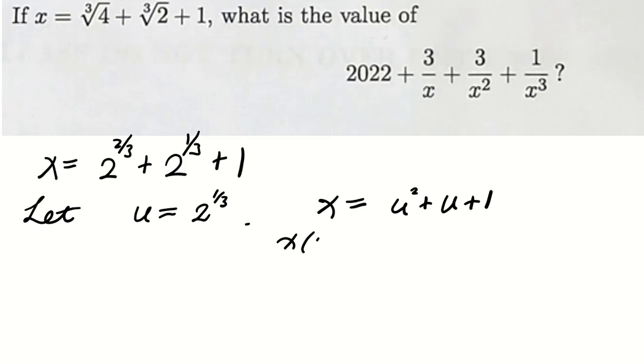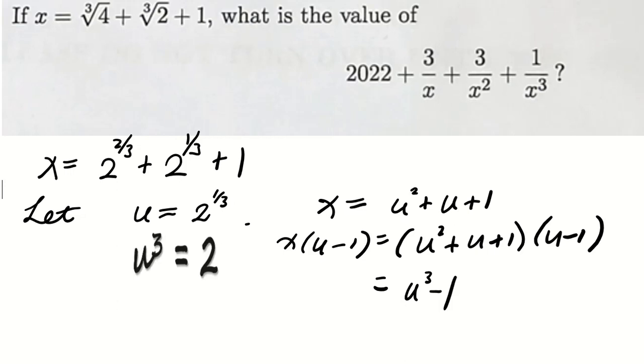Note that if we multiply both sides by u minus 1, then for the right-hand side, it equals u squared plus u plus 1 times u minus 1. This equals u cubed minus 1. And note that u equals 2 to the power of 1/3, which means that u cubed equals 2. Therefore, u cubed minus 1 equals 1.